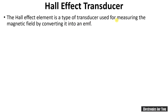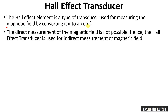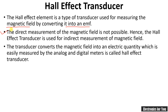A Hall Effect element is a type of transducer used for measuring a magnetic field by converting it into an EMF. It is based on the Hall Effect itself, which is used for magnetic field to EMF conversion. The direct measurement of the magnetic field is not possible, and therefore we use the Hall Effect for its measurement. The transducer converts the magnetic field into an electrical quantity.